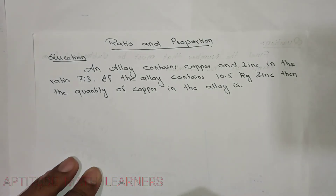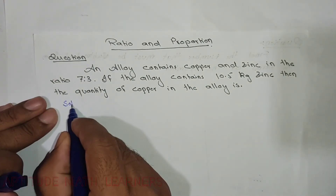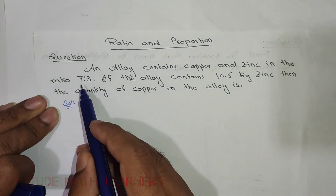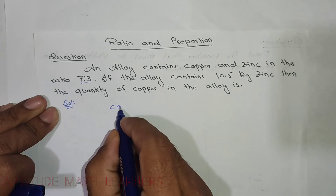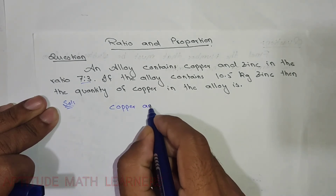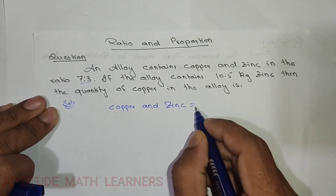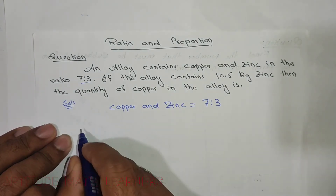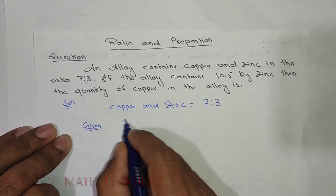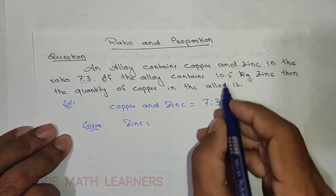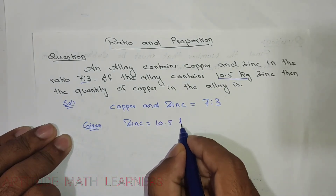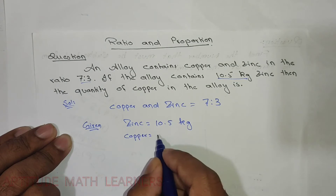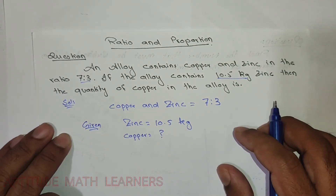Let's start with our solution. We have the ratio of copper and zinc, that is 7:3. Given that zinc is equal to 10.5 kg, and the quantity of copper is to find.